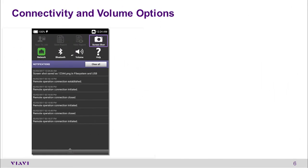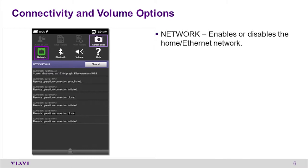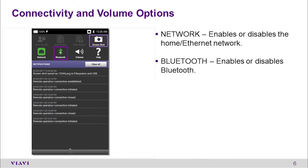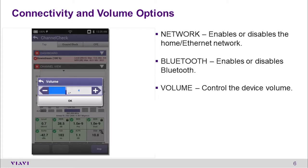The Network icon allows you to enable or disable the Ethernet port on the side of the LNX meter. The Bluetooth icon allows you to enable or disable Bluetooth connections to the LNX meter. The Volume icon allows you to quickly change the volume for notifications such as Test Complete on the LNX meter.